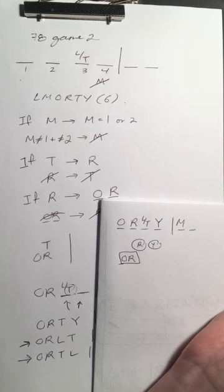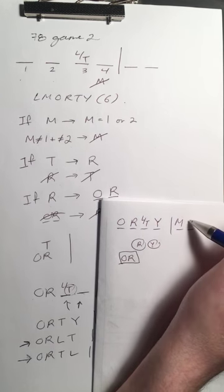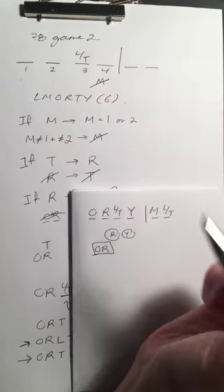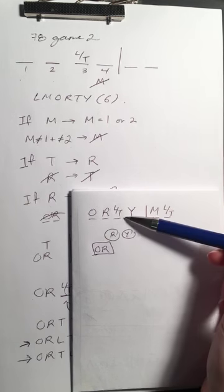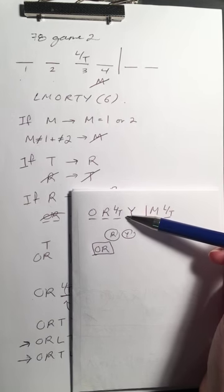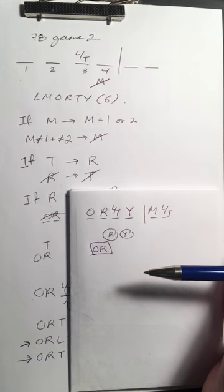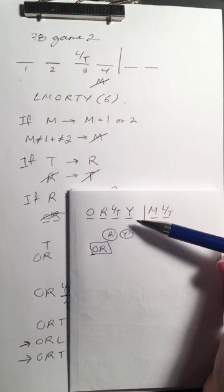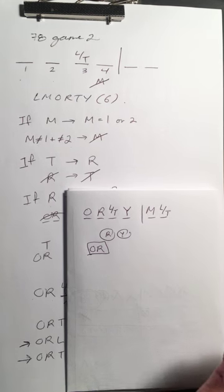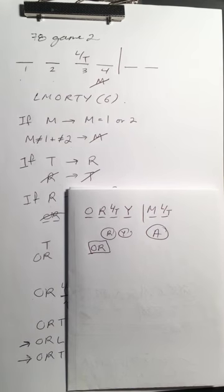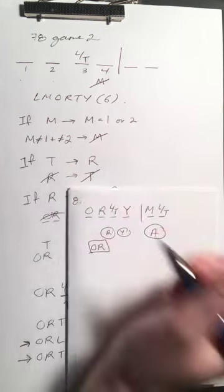Looking at the answer choices: A looks like it could be true — we could have L in spot three. M in spot one? No. O in spot two? No. T in spot two or four? No. Y in spot two? No. So it's got to be A. That one was relatively straightforward; some of the other questions are definitely harder. That's question eight done.